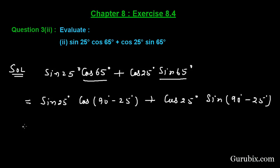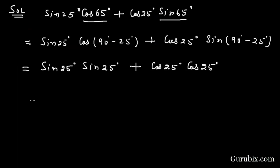So this equals sin 25° sin 25° + cos 25° cos 25°. This is equals to sin² 25° + cos² 25°.